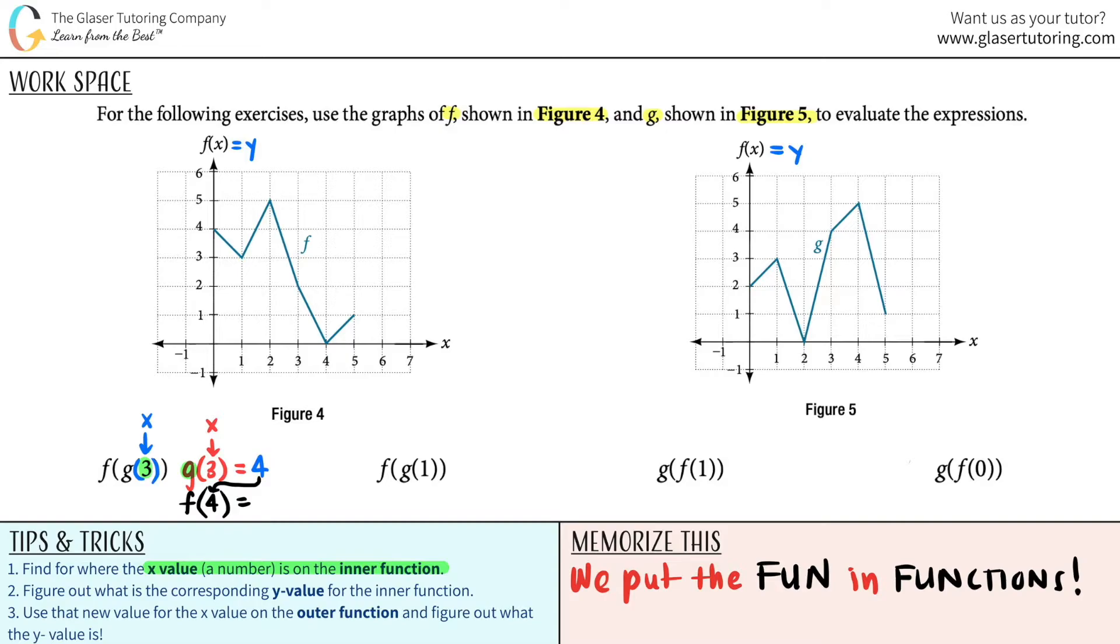And remember, any time that you have a letter or a number in parentheses with functions, this is your new x value. So now I'm looking at the f graph. f of 4 is right here, and it looks like it hits the graph right there. So what's the corresponding y value? It's zero. So the answer would be zero. Pretty cool, right? So I'm just going to check this guy off. The answer here would be zero. Let's go to the next one.